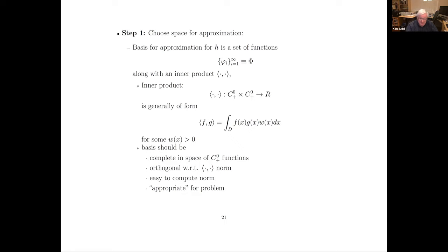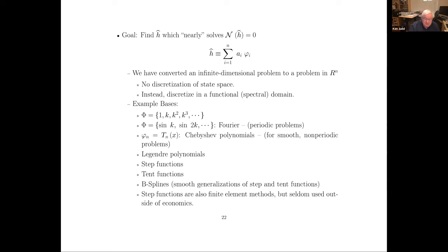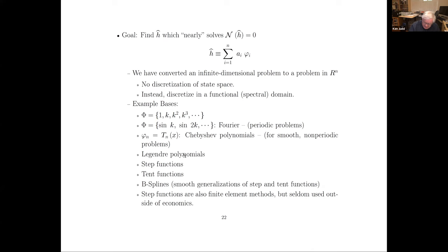It would be nice if the basis functions were orthogonal with respect to the inner product norm. The norm should be easy to compute, and the basis should be appropriate for the problem. We come up with an H-hat approximation. The unknown H lies in an infinite dimensional space; we now transform the problem into a finite dimensional space — we haven't discretized the state, but we have discretized the problem in the spectral domain. The basis could be ordinary polynomials, trigonometric or Fourier if your problem is periodic, Chebyshev polynomials if not periodic, Legendre, and various other functions. Those are linear approximations — you approximate a function as a linear combination of basis functions.